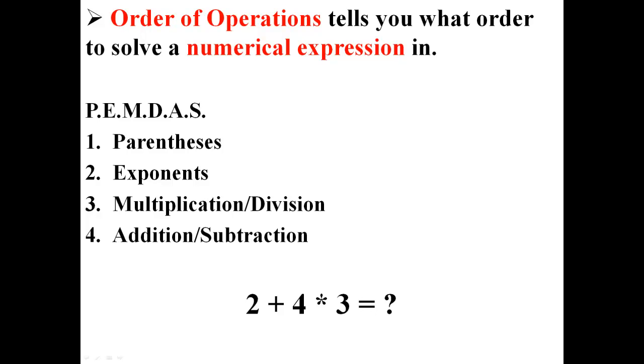So back to our expression. If you have 2 plus 4 times 3, well, we have no parentheses and we have no exponents. So we start with the multiplication, which we do have. We take 4 times 3, which is 12, and then we perform our addition. Now we have our final answer, which is 14.